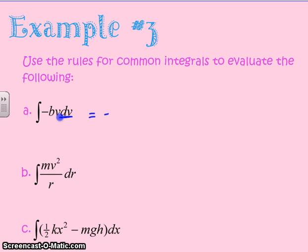So, following my rule, I have negative b times v to the n plus 1, which would be 2 because n is 1, divided by n plus 1, which is 2, plus c.